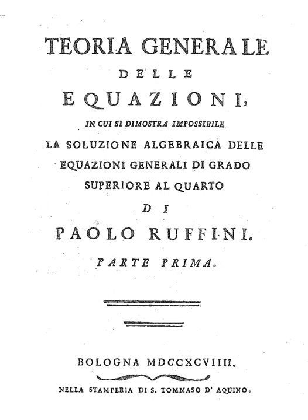In algebra, the Abel-Ruffini theorem, also known as Abel's impossibility theorem, states that there is no algebraic solution—that is, solution in radicals—to the general polynomial equations of degree 5 or higher with arbitrary coefficients. The theorem is named after Paolo Ruffini, who made an incomplete proof in 1799, and Niels-Henrik Abel, who provided a proof in 1824.